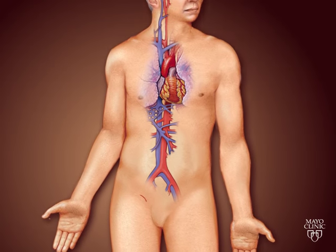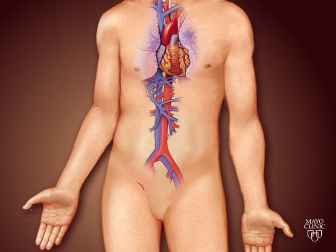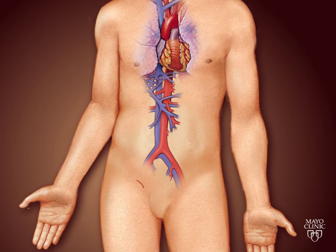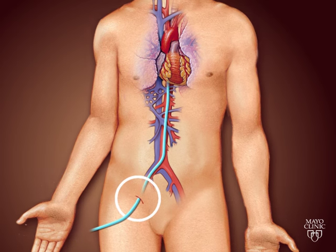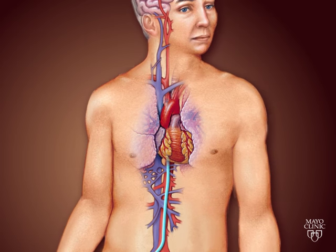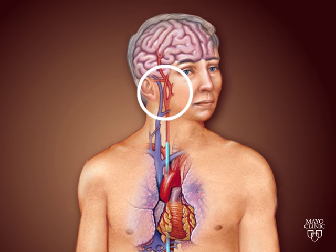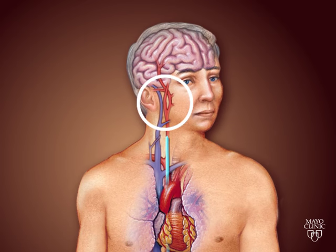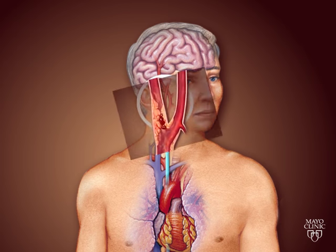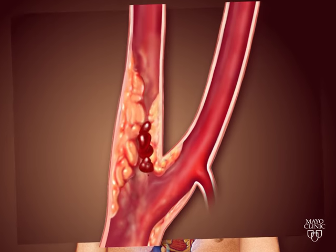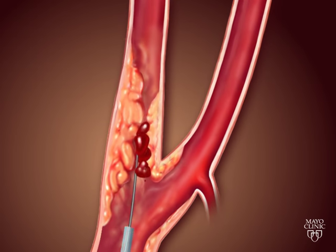In carotid angioplasty and stenting, a long, hollow tube called a catheter is inserted in the femoral artery in the groin area. The catheter is then maneuvered through the arteries until it reaches the narrowing in the carotid artery in the neck.